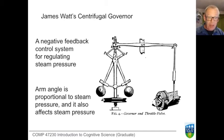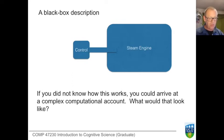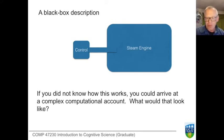Now we know everything about this — we know how it works. But supposing we didn't. Supposing we came upon this: the steam engine linked to a controller, and they're both black boxed. We can see the outside of them, but we don't know what's inside. There's one part that we've called control — that's what a governor means, really — and then there's the steam engine. Supposing we approached this with that view in mind, how would we go about describing it?